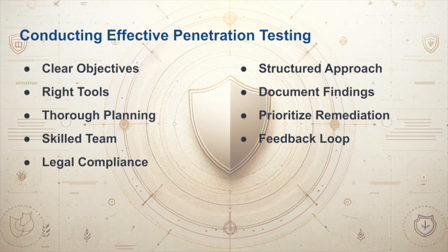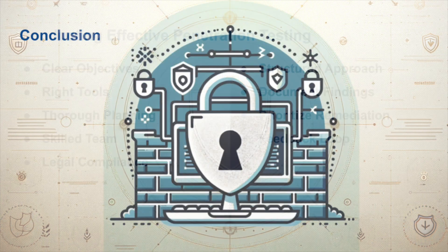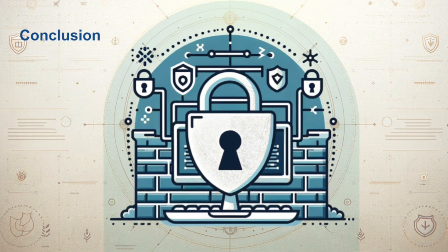Incorporating these insights back into the development process creates a feedback loop, enhancing security measures, and fostering a culture of continuous improvement in security practices. In conclusion, the cornerstone of building secure applications lies in the integration of code reviews, static analysis, and penetration testing into our daily development practices. By making these activities routine, we not only elevate the security of our applications, but also cultivate a development culture that prioritizes security at every step. This ongoing commitment will lead to more robust and trustworthy applications.